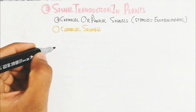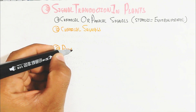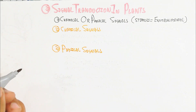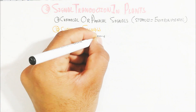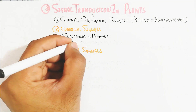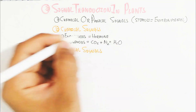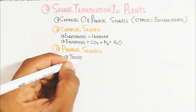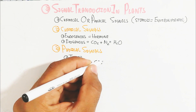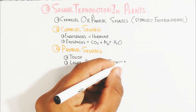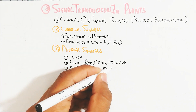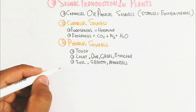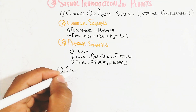Chemical signals can be endogenous, such as hormones, or exogenous, such as carbon dioxide, nitrogen dioxide, amino acids, and other minerals and water. Physical signals can include touch, which changes the growth pattern of the plant, as well as light, air, gases such as ethylene, and gravity.